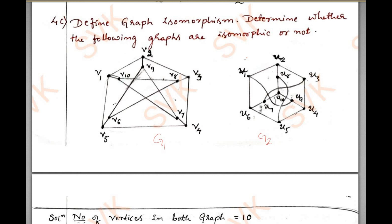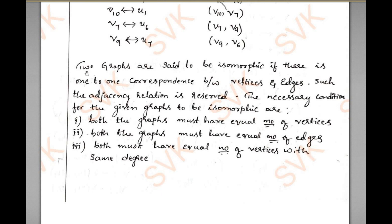Let us define what isomorphism is. Two graphs are said to be isomorphic if there is a one-to-one correspondence between vertices and edges, such that the adjacency relation will be preserved.